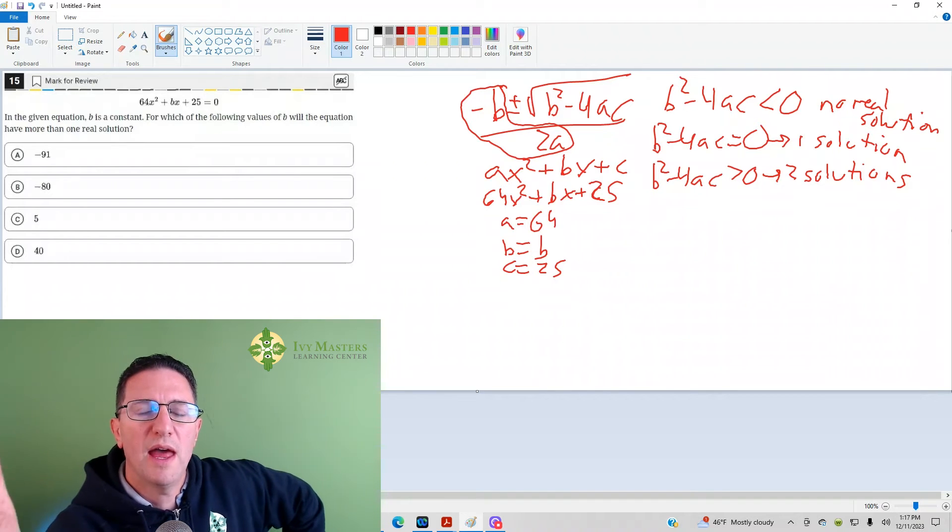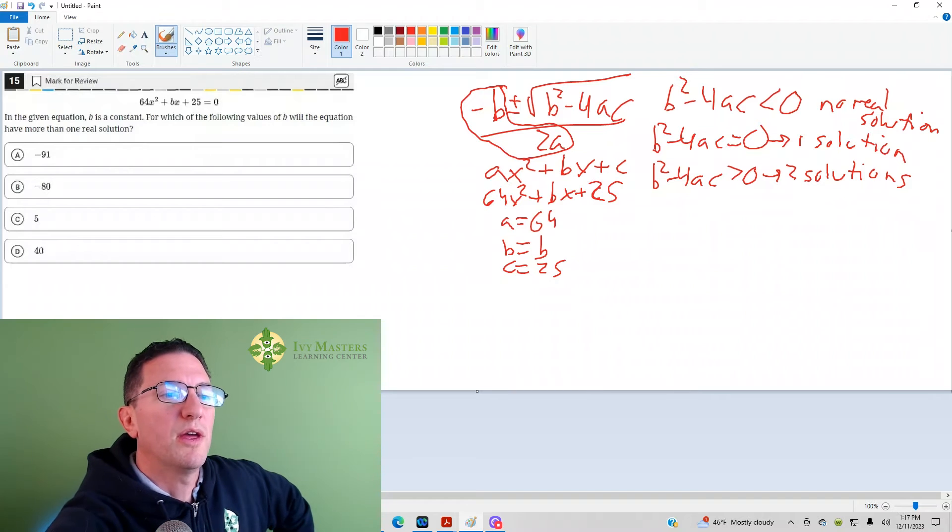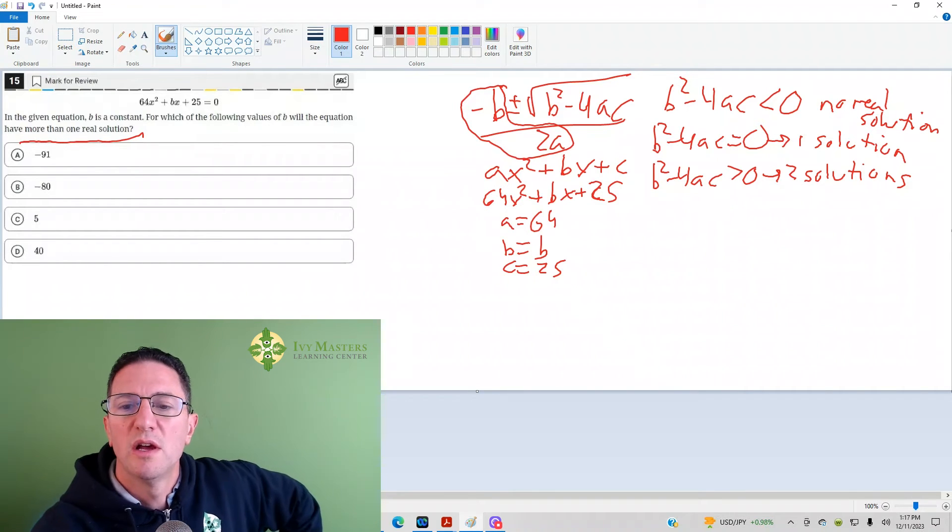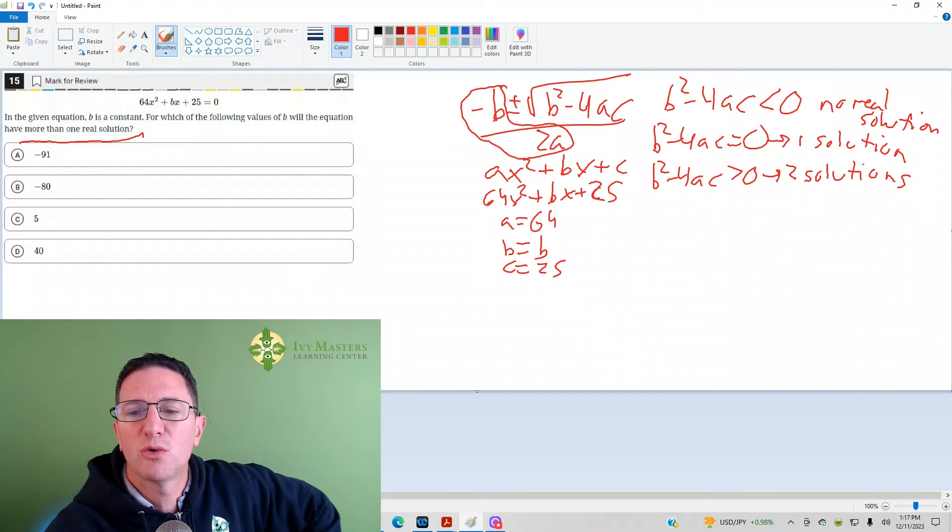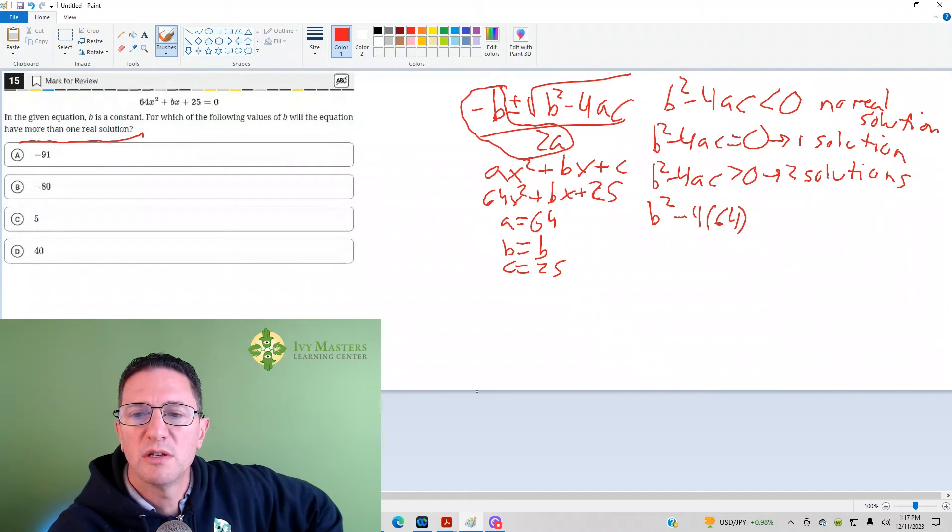We need more than one real solution. So we need b squared minus 4ac to be greater than 0. In place of b, we put b because our b is b, minus 4. In place of a, we put 64 times 64 times our c, which is 25. That's got to be greater than 0.